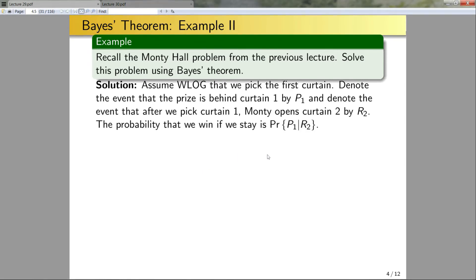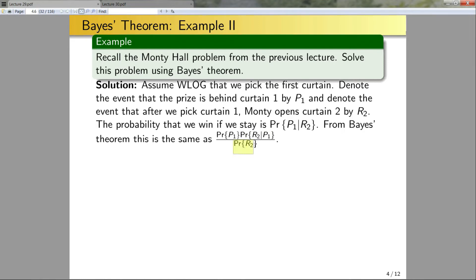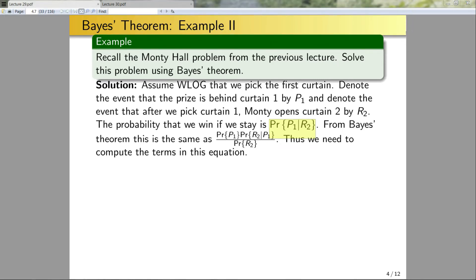The probability that we win if we stay is going to be the probability that the prize is behind curtain one, the one we picked, given that Monty tells us there's a goat behind curtain two. From Bayes' theorem this is the probability of P1 times the probability of R2 given P1, all divided by the probability of R2. Once we have this conditional probability, if it's less than one half it's better to switch; if equal to one half it doesn't matter; if greater than one half we should stay.